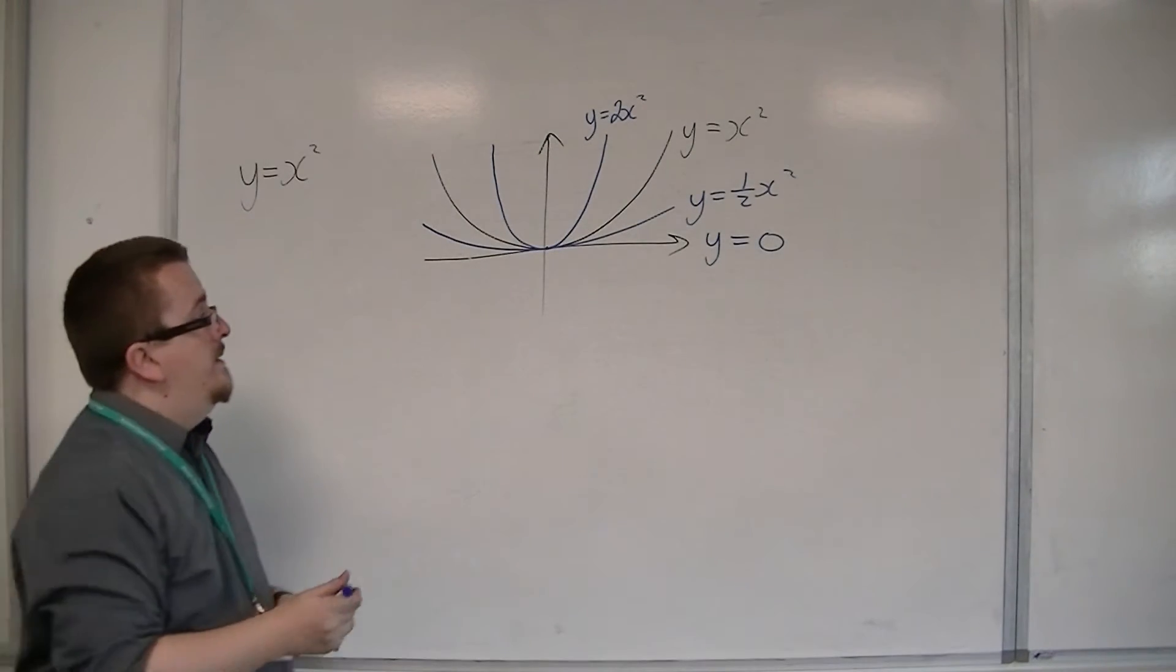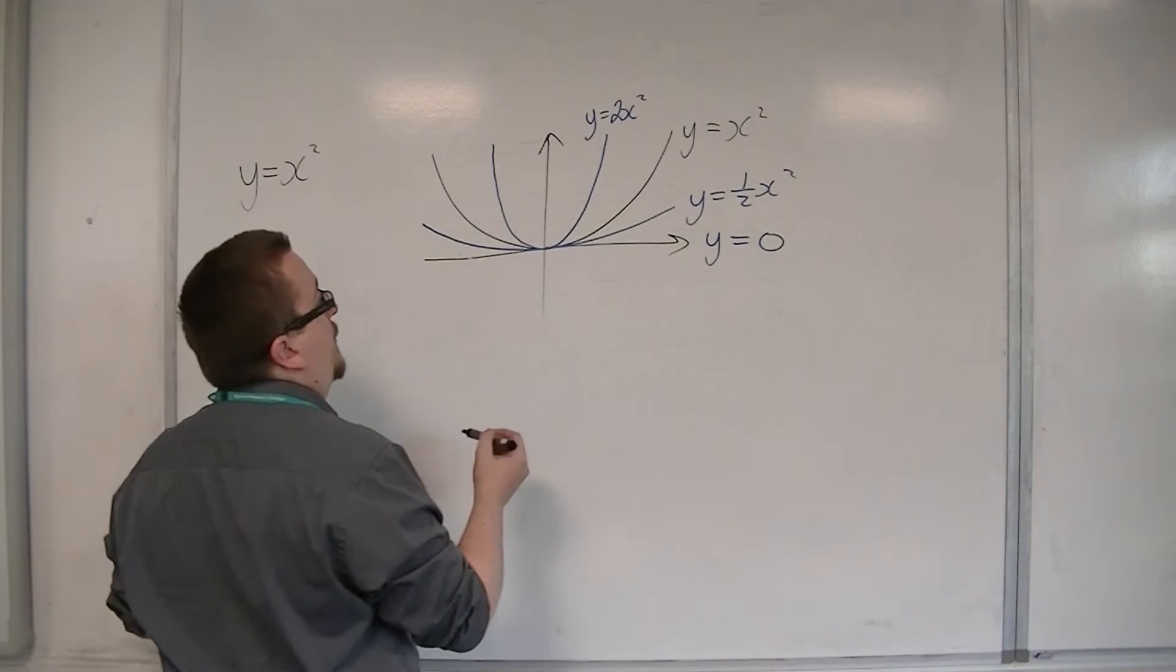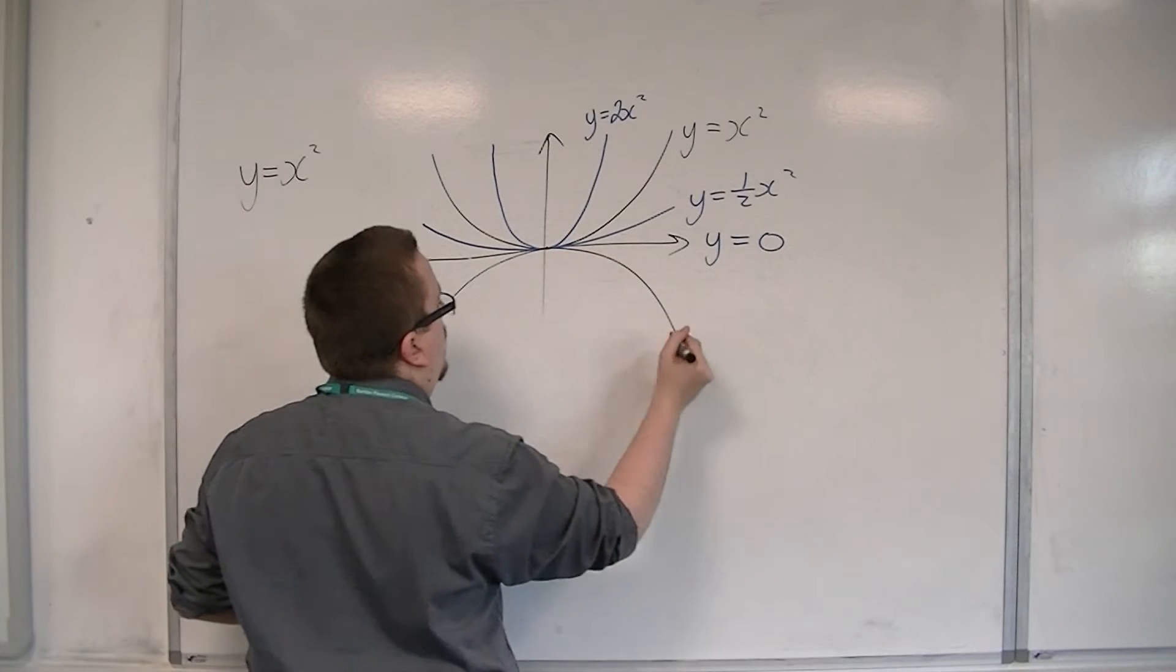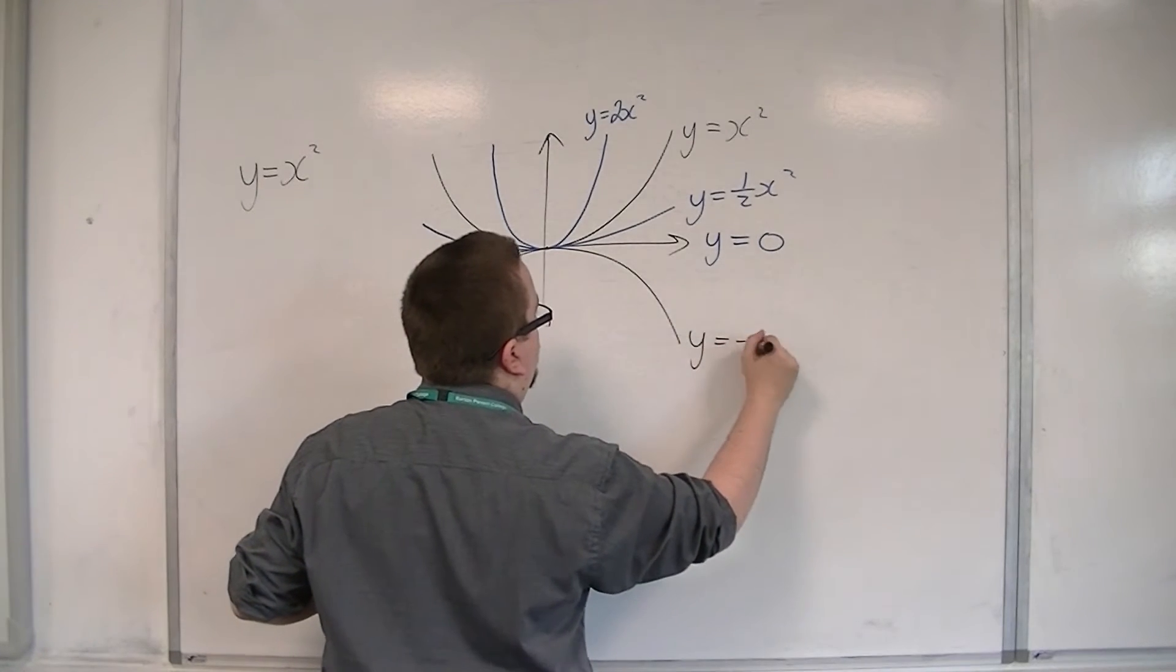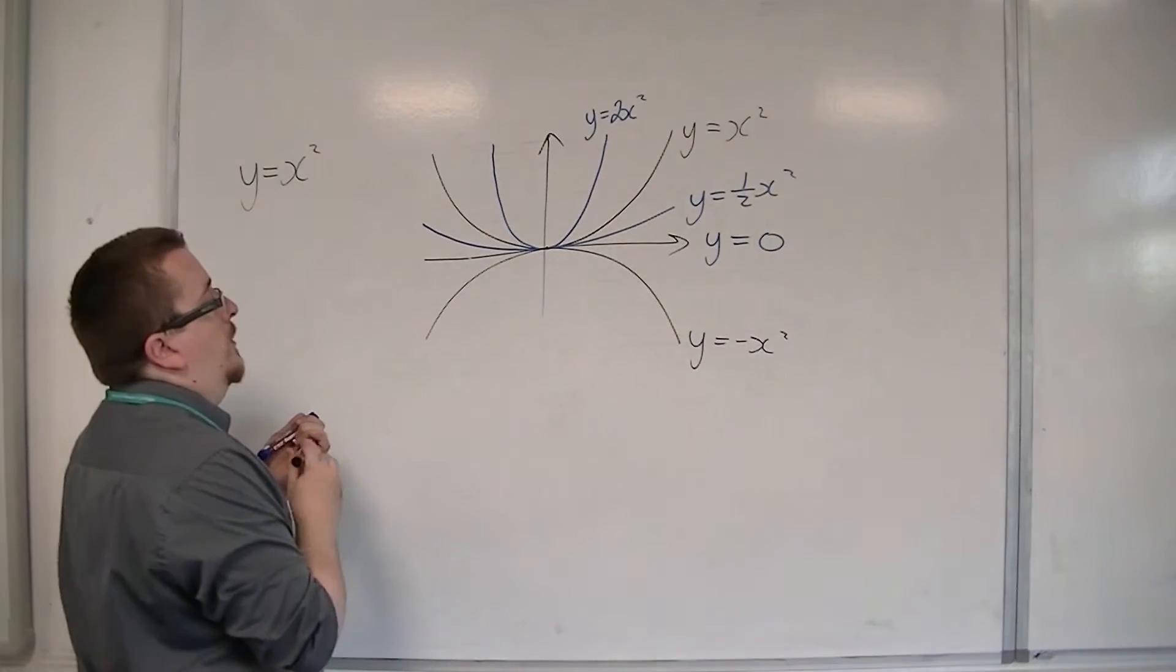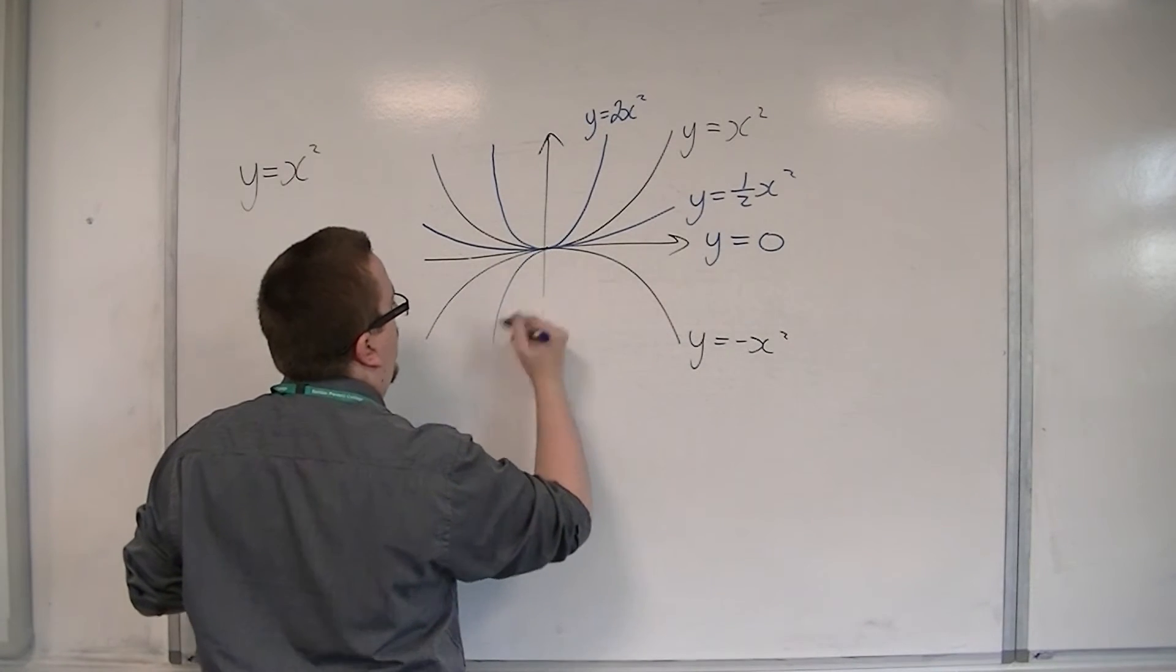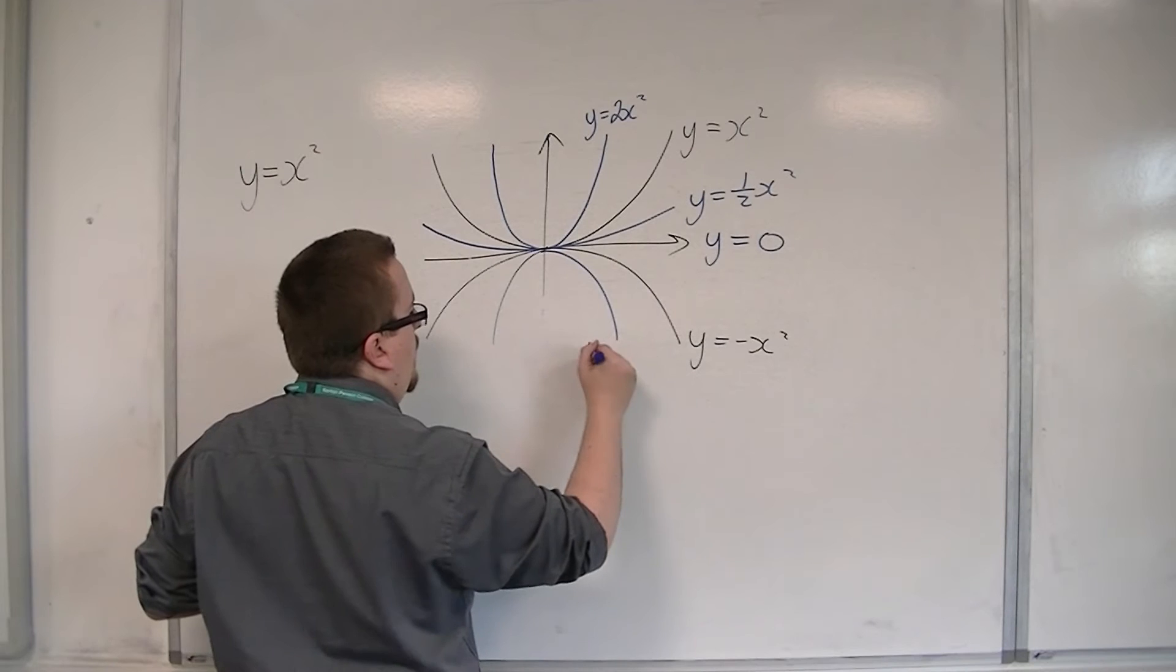And then we're going to get into the negative numbers. So y equals minus x squared looks like this. And y equals minus 2x squared would look like that.